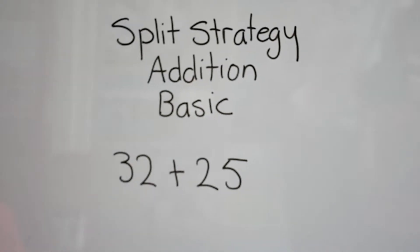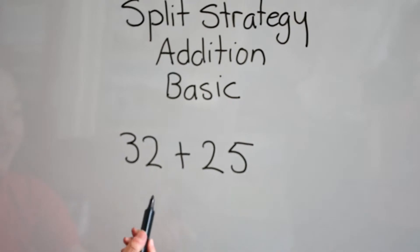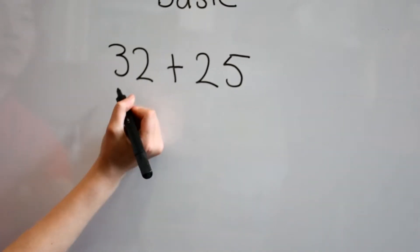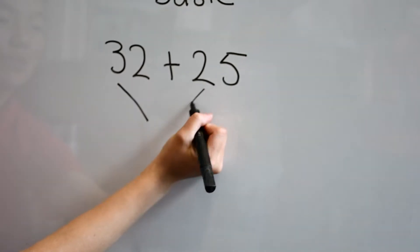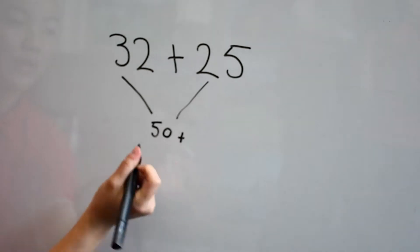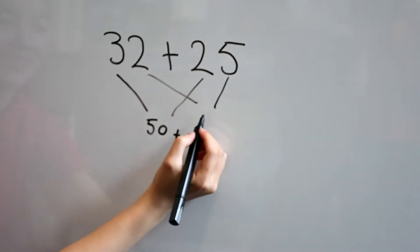Split strategy for addition basic mental computation. So we've got 32 plus 25. We always plus the tens first. So 30 plus 20 is 50. Now we have to add the units. So 2 plus 5 is 7.